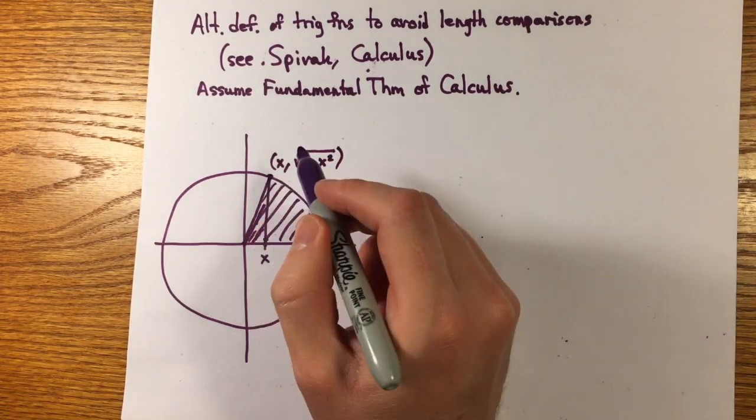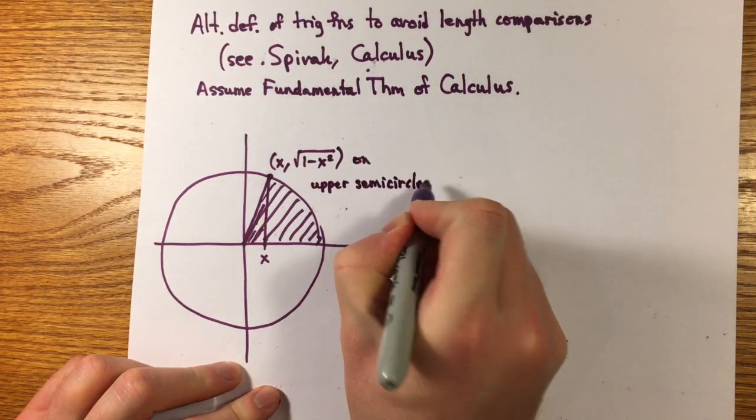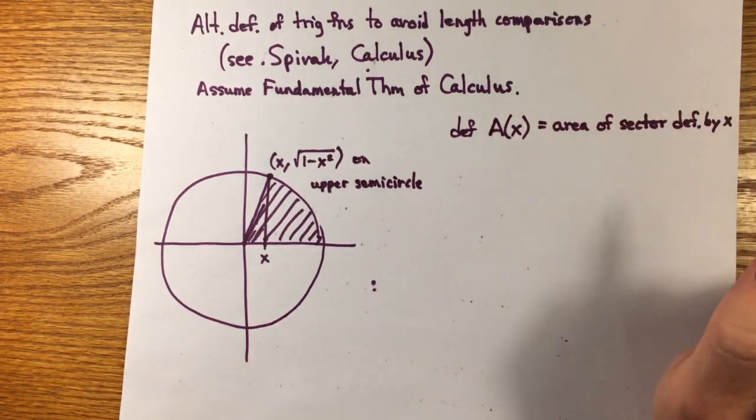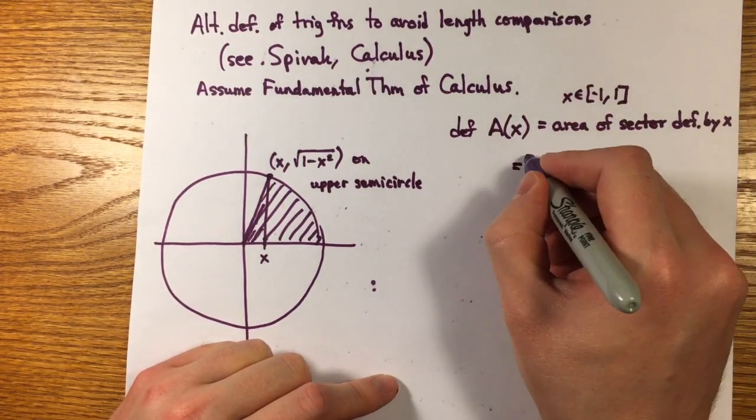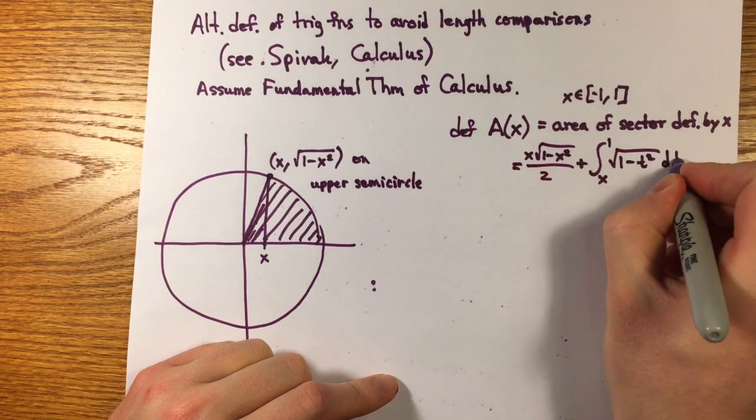So, for a point x in minus 1, 1, he sets a of x to be the area of the sector of the upper semicircle defined by x, given by the signed area of the triangle plus an integral.